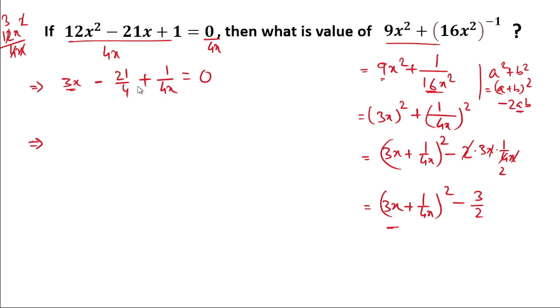So from here we have 3x + 1/4x. Now we'll take this -21/4 to the right-hand side, so 3x + 1/4x equals 21/4.